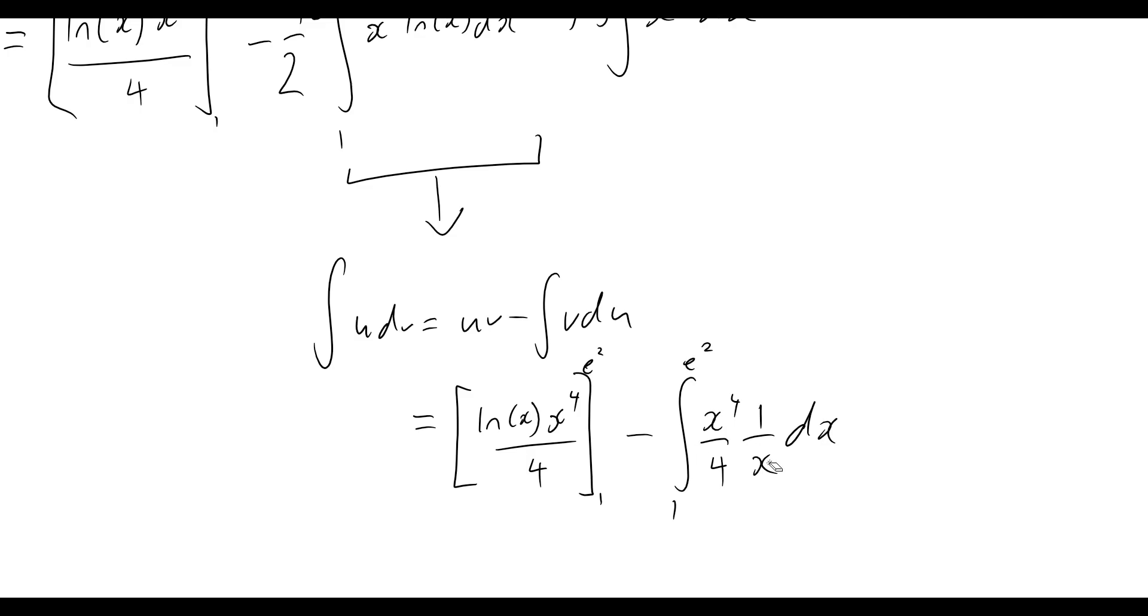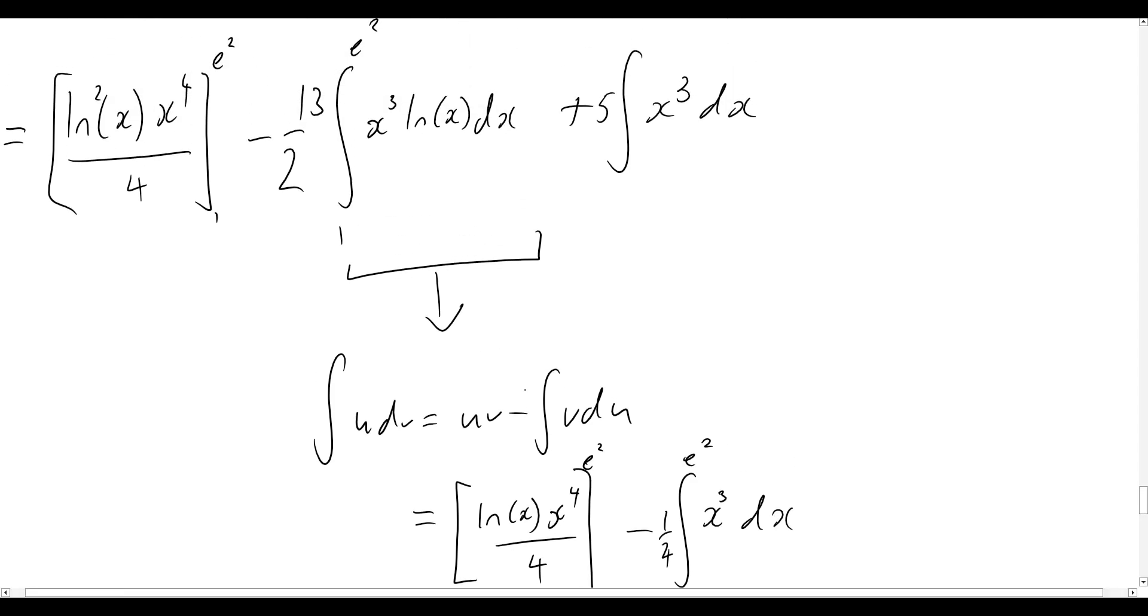Okay, so neatening this up a little bit. Again, we can cross out some of those x's. So that'll become x cubed. And now we have just a 1 on 4 out the front there. dx. So we are definitely getting there.